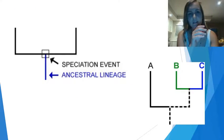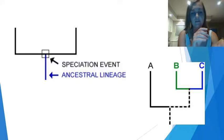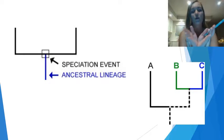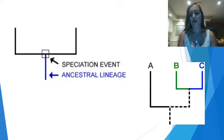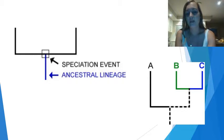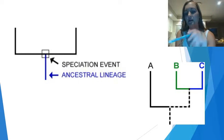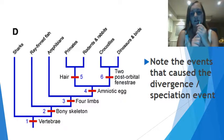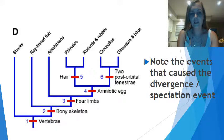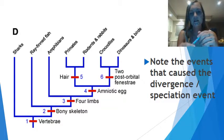In the pictures, we have the ancestral lineage and the speciation event, which causes the population to split into two species. You can see that in the far right picture, this has occurred twice to cause three separate species. Here's an example of speciation events, and you can see what characteristics have split the two groups.